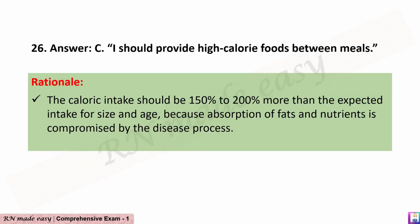The correct answer is C: I should provide high-calorie foods between meals. Rationale: The caloric intake should be 150% to 200% more than the expected intake for size and age, because absorption of fats and nutrients is compromised by the disease process.